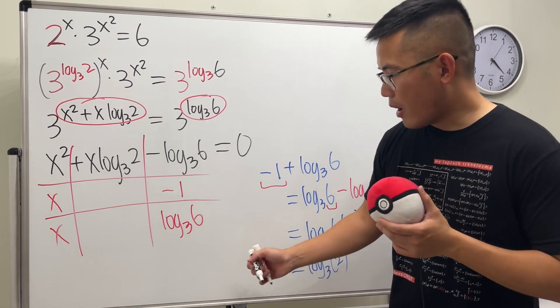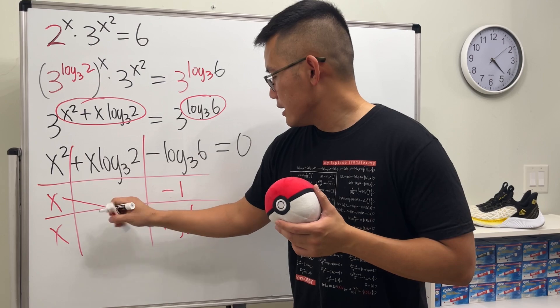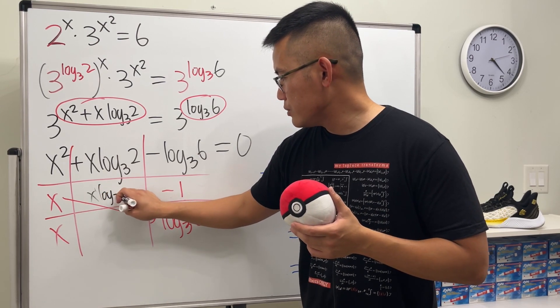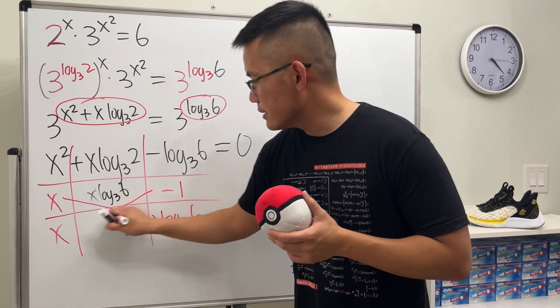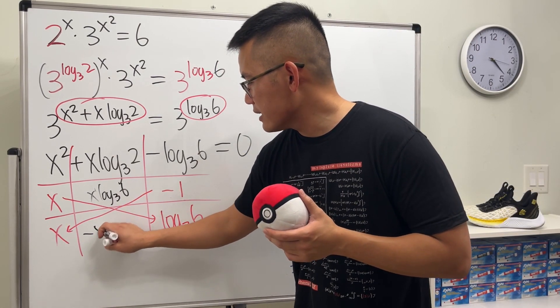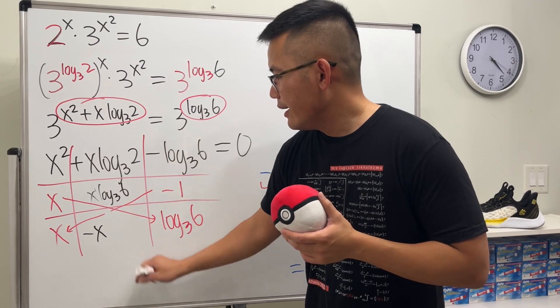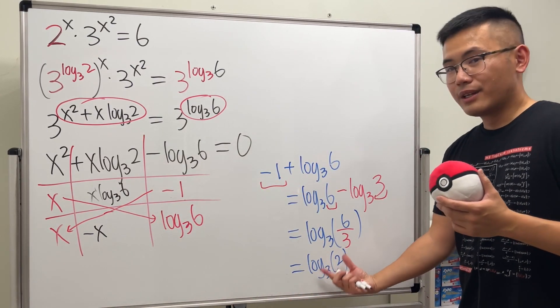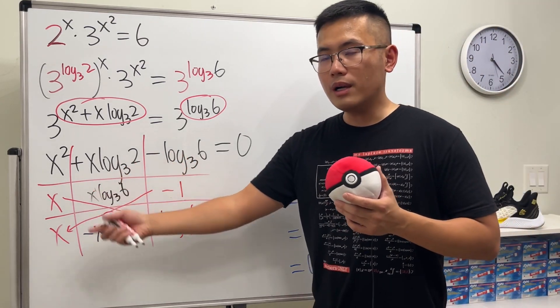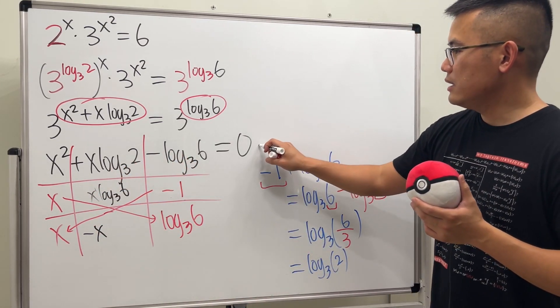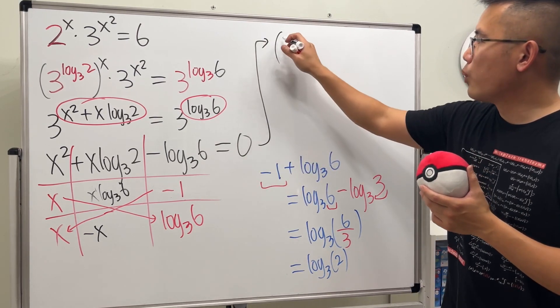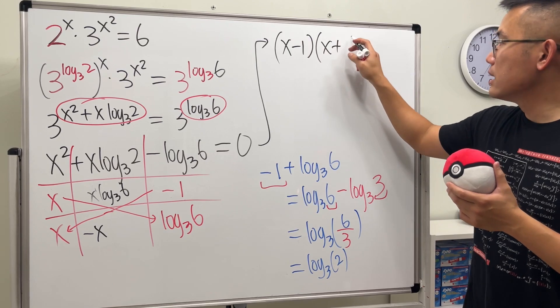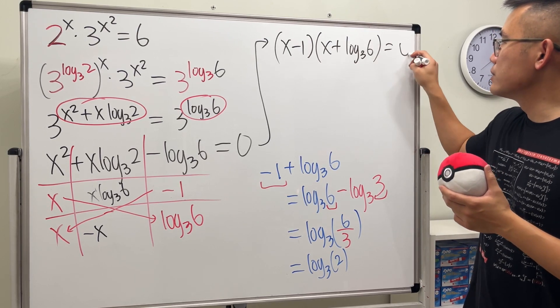So the middle part, when we do this times that, we get, let's put on x first, and then log base 3 of 6, and then when we do this times that we get negative x, just negative x. And when we combine them, well the coefficient is going to be this, which is exactly what we want. So this right here factors to be x minus 1 times x plus log base 3 of 6 equals 0.